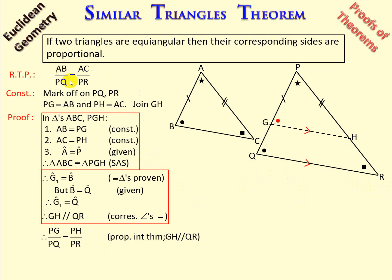And remember where I want to go. I want to prove that AB over PQ is equal to AC over PR. So, we're very close.